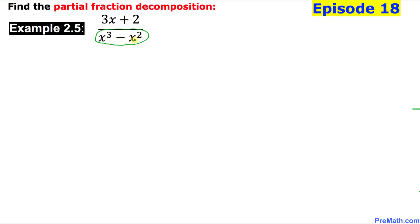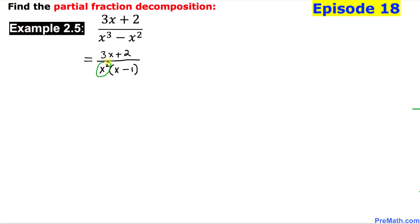As we can see, x squared can be factored out. So we can write the numerator 3x plus 2 on top, and in the denominator I am going to factor out x squared, giving us x squared times x minus 1. The denominator has x squared — meaning x repeats twice — and another linear factor x minus 1.